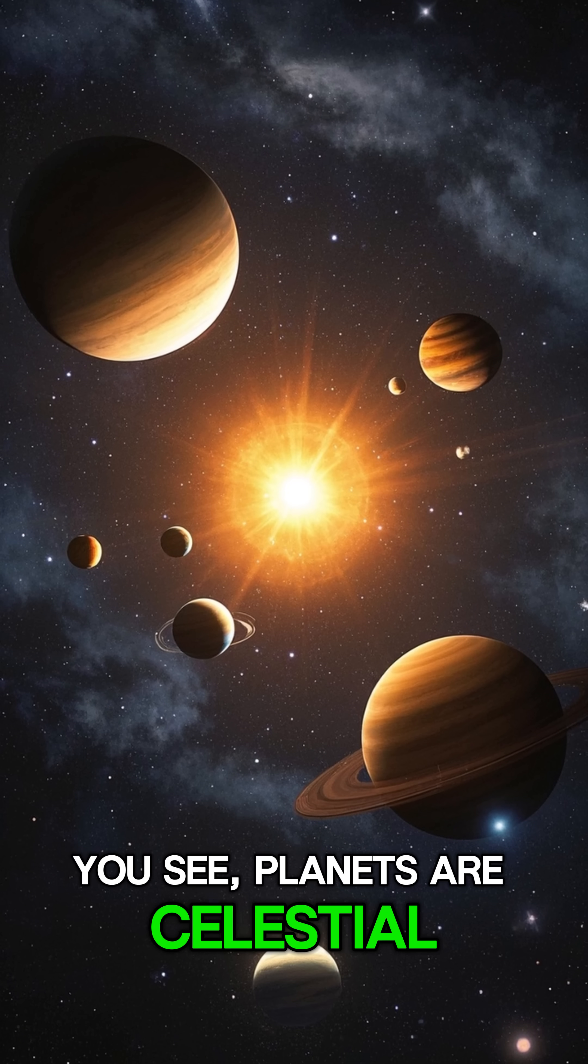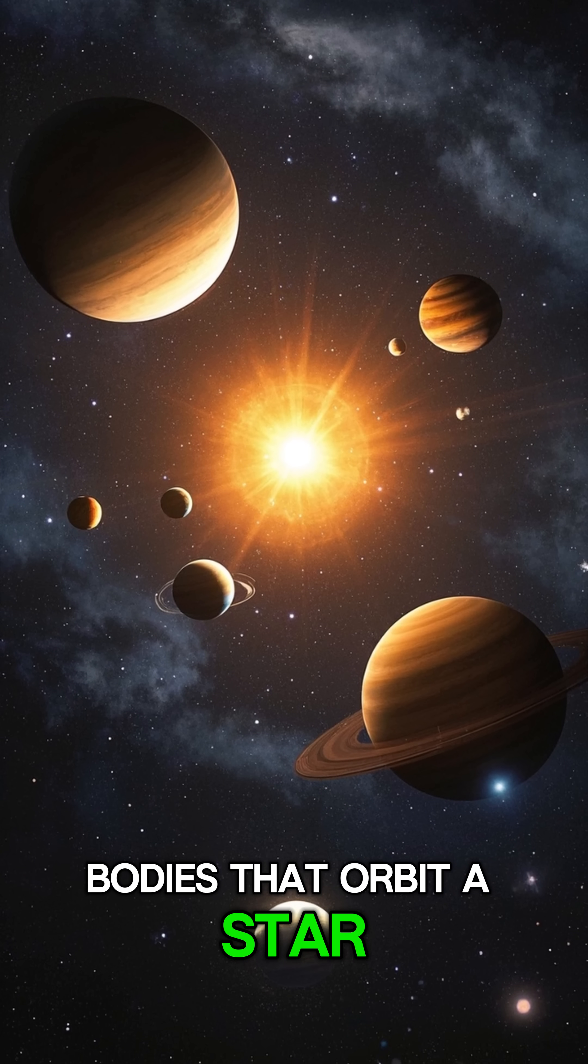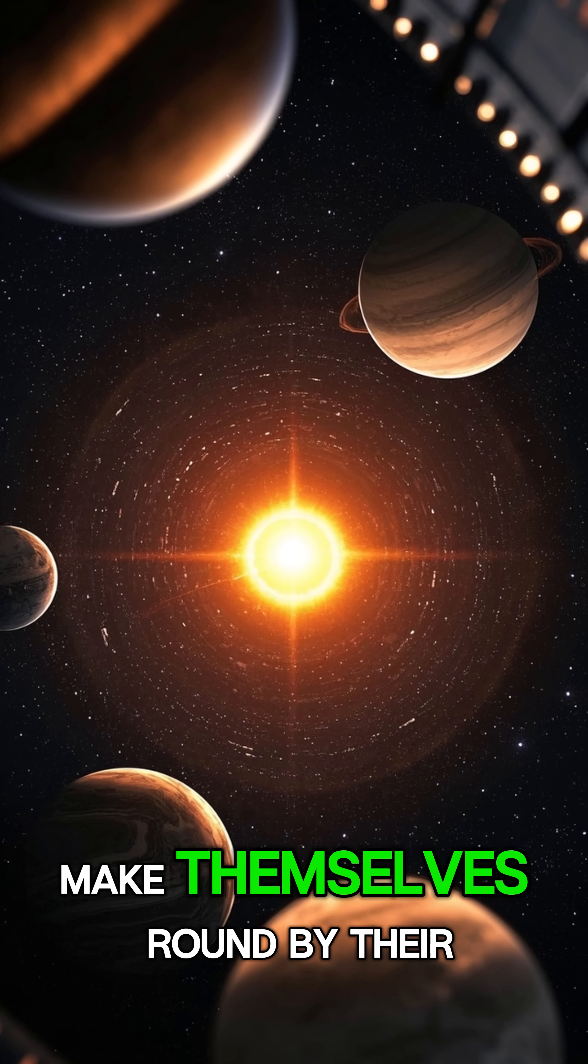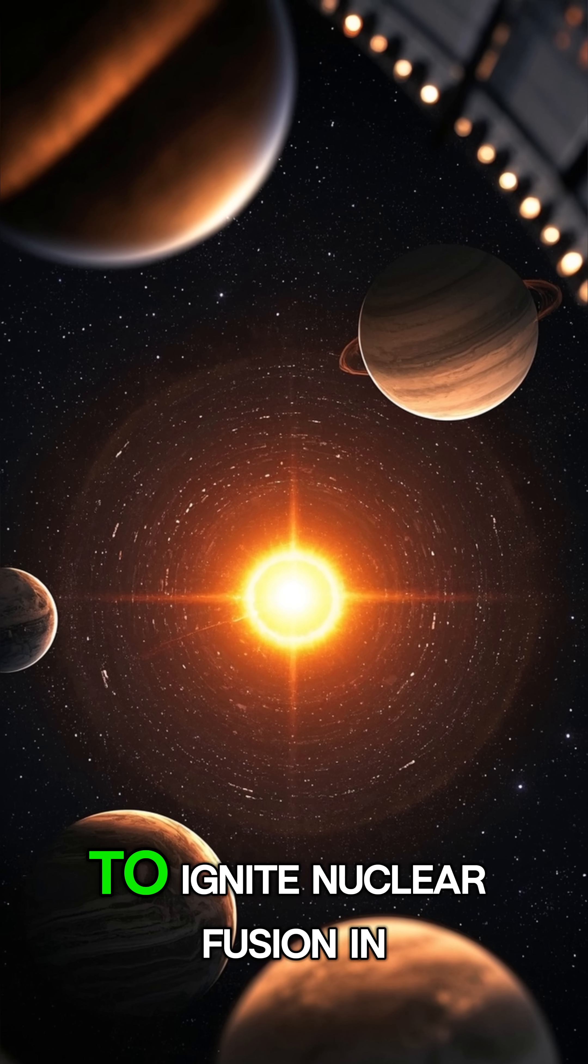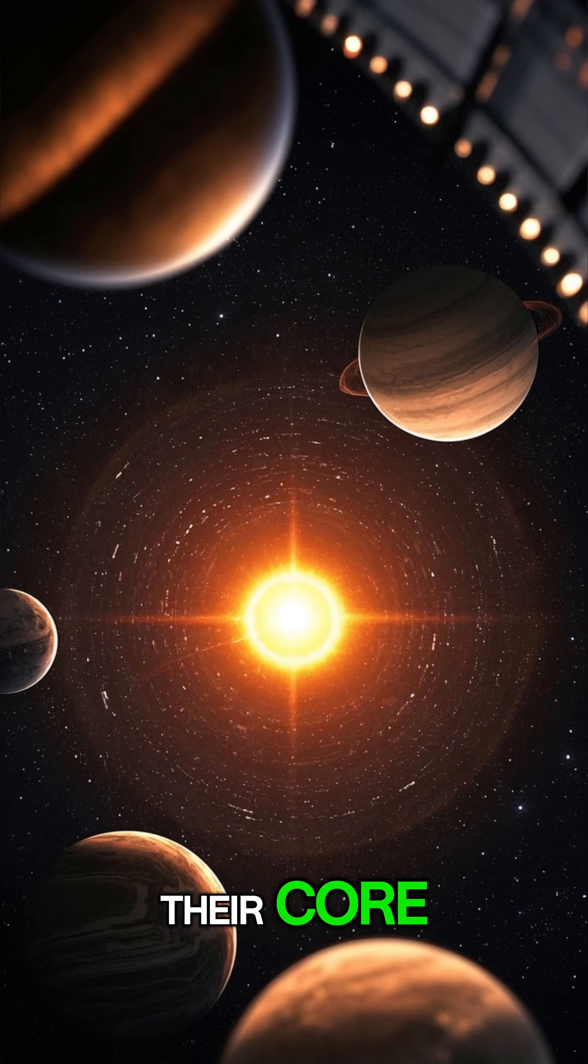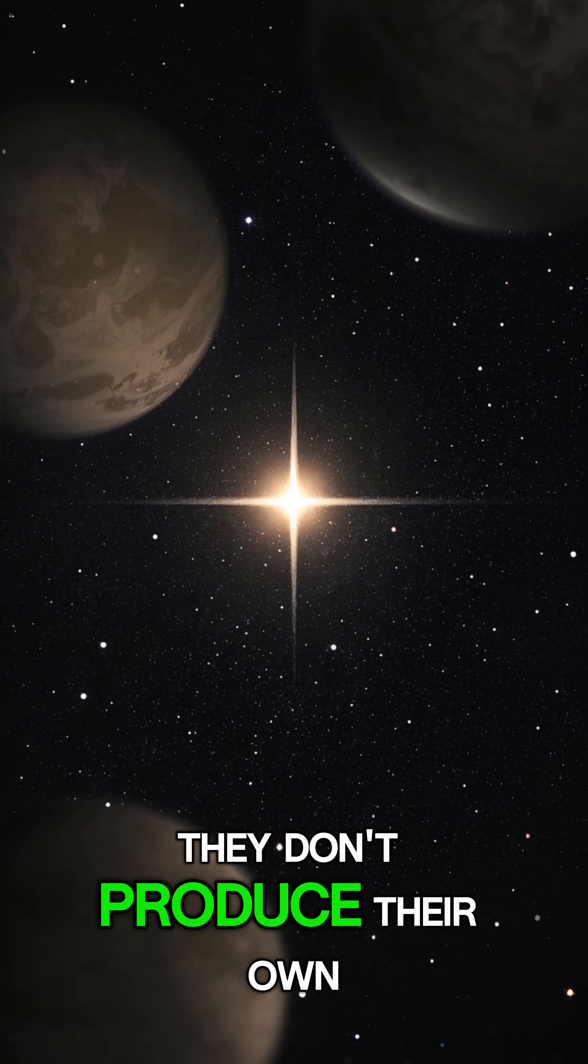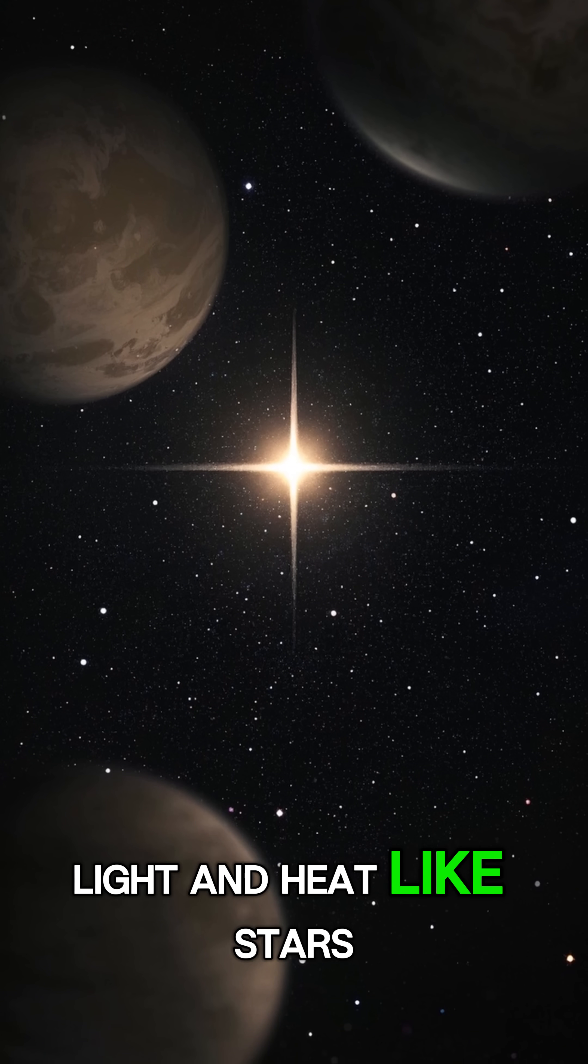You see, planets are celestial bodies that orbit a star. They have enough mass to make themselves round by their own gravity, but they're not massive enough to ignite nuclear fusion in their core. In other words, they don't produce their own light and heat like stars do.